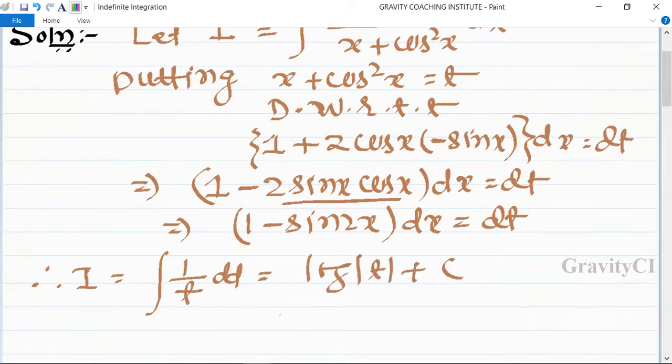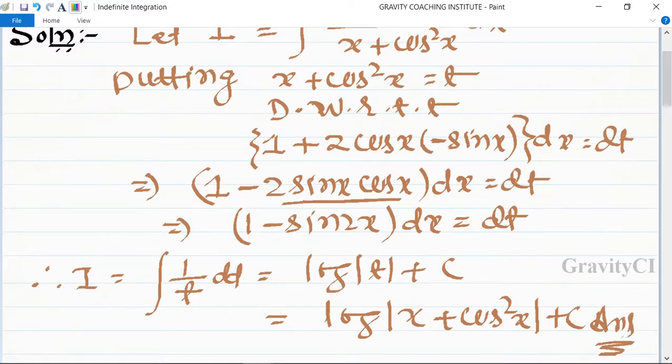Substituting back, this equals log|x + cos²x| + C.